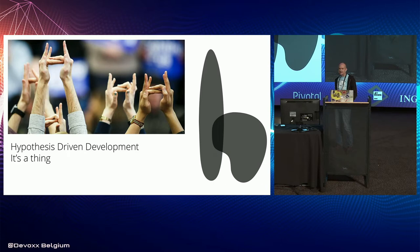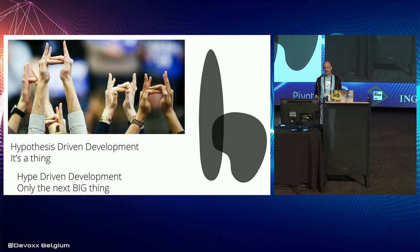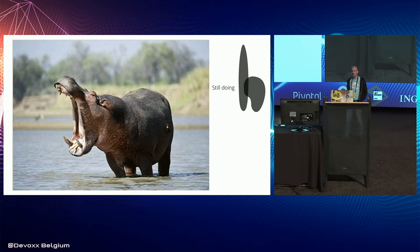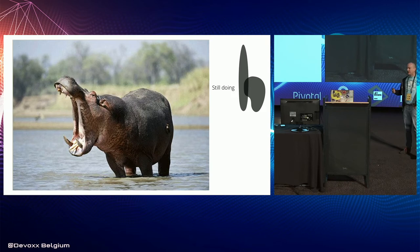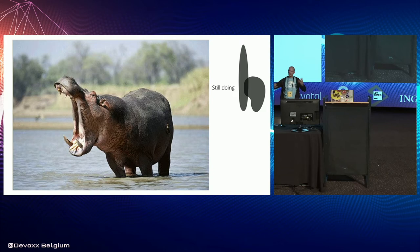H is for hypothesis-driven development — that is a good thing we try to promote. Also H: hype-driven development, which is of course only the next big thing. And H is a fruitful letter — we have hippo-driven development. HIPPO is the highest-paid person's opinion. You have a meeting with 20 people, 19 of whom are doing the work, but one is the highest-paid person so that opinion counts. You talk and talk, and then the hippo makes the decision, even if they're outvoted 1 to 20.